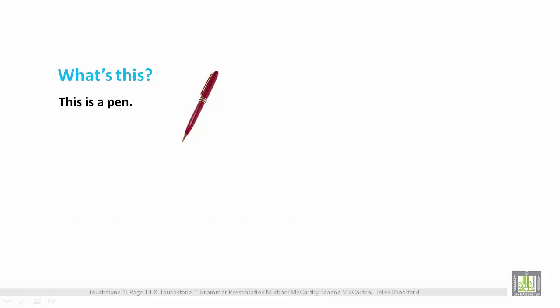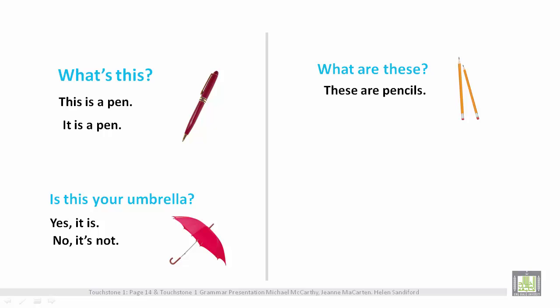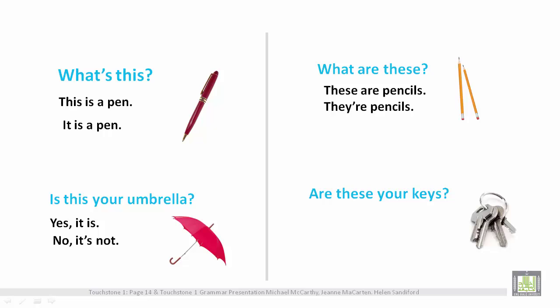Example sentences with 'this' and 'these': What's this? This is a pen. It is a pen. Is this your umbrella? Yes, it is. No, it's not. What are these? These are pencils. They're pencils. Are these your keys? Yes, they are. No, they're not.